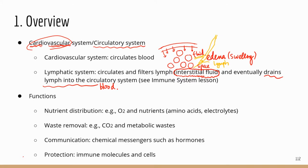Like blood, lymph flows one way — it does not go back. It circulates through the body and eventually returns to specific locations on each side of the body: the junction of the internal jugular vein and the subclavian vein. The lymphatic vessels deliver the lymph back to that junction, returning it to the blood. If you combine the cardiovascular system and the lymphatic system together, that's the circulatory system.